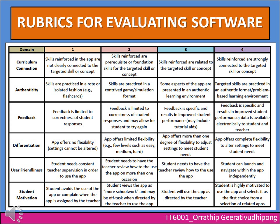Third domain: Feedback. One point — feedback is limited to correctness of student responses; two points — feedback is limited to correctness and may allow the student to try again; three points — feedback is specific and results in improved student performance, may include tutorial aids; four points — feedback is specific, results in improved student performance, and data is available electronically to students and teachers.